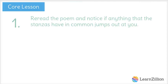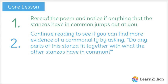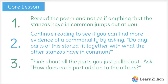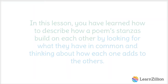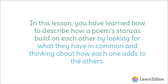In this lesson, we first re-read the poem to notice if anything that the stanzas have in common jumps out at you. Then we continued reading to see if you could find more evidence of a commonality by asking, do any parts of this stanza fit together with what the other stanzas have in common? Third, we thought about all the parts you just pulled out and asked, how does each part add on to the others? In this lesson, you have learned how to describe how a poem's stanzas build on each other by looking for what they have in common and thinking about how each one adds to the others.